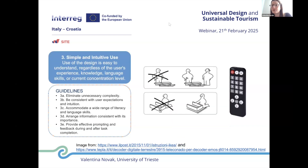For the third principle, simple and intuitive use, the guidelines are: eliminate unnecessary complexity, be consistent with user expectations and intuition, accommodate a wide range of literacy and language skills, arrange information consistent with its importance, and provide effective prompting and feedback during and after task completion. For example, a smartphone application with very clear icons and a minimalist interface, where the main functions are very easy to understand without complex instructions, allowing elderly people or inexperienced users to use different tools.